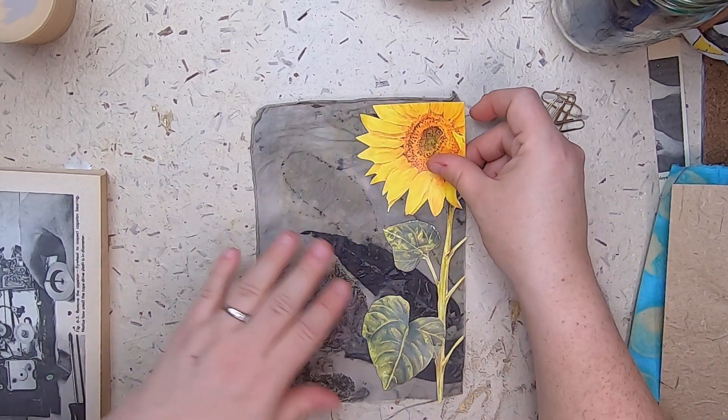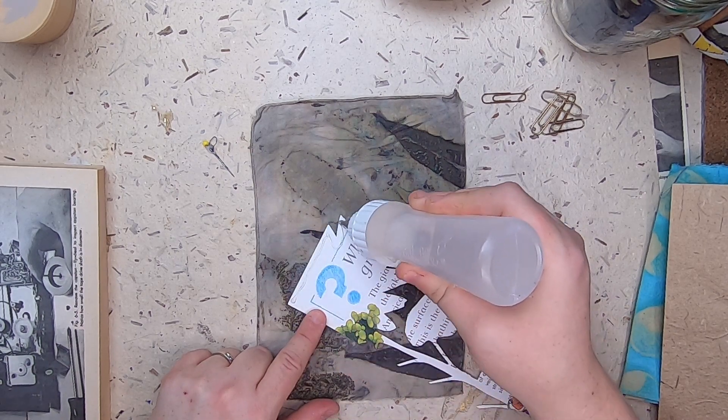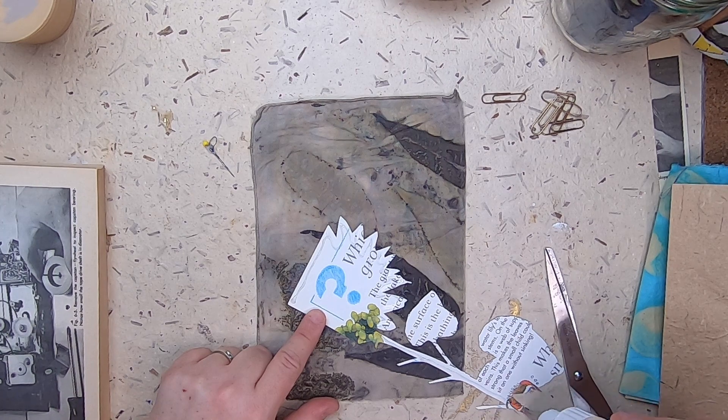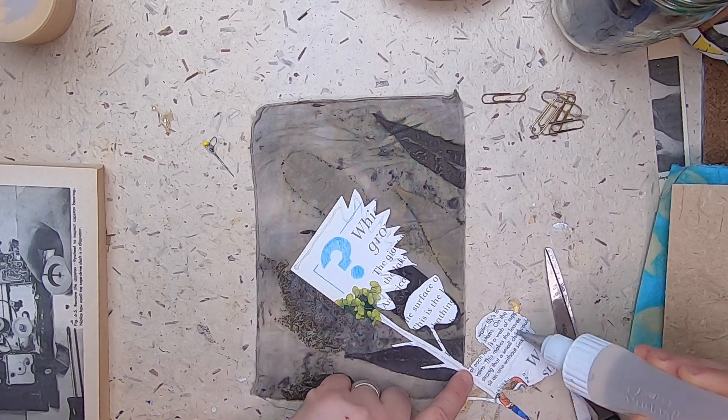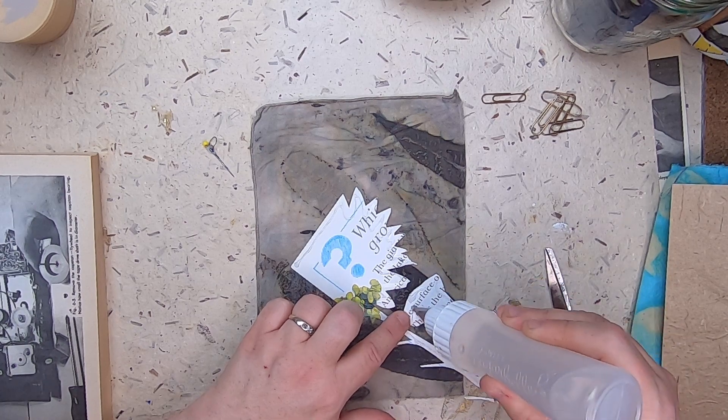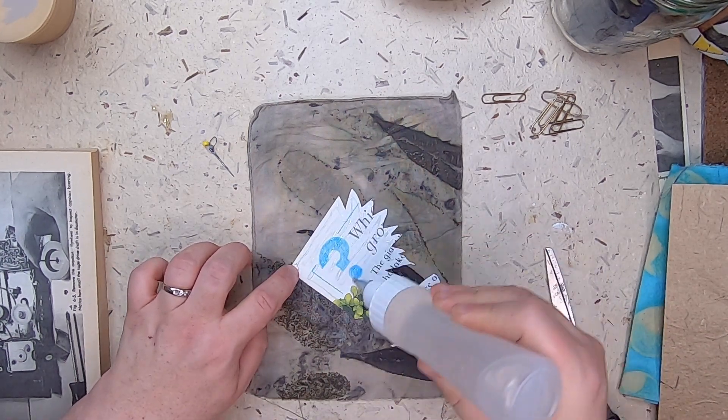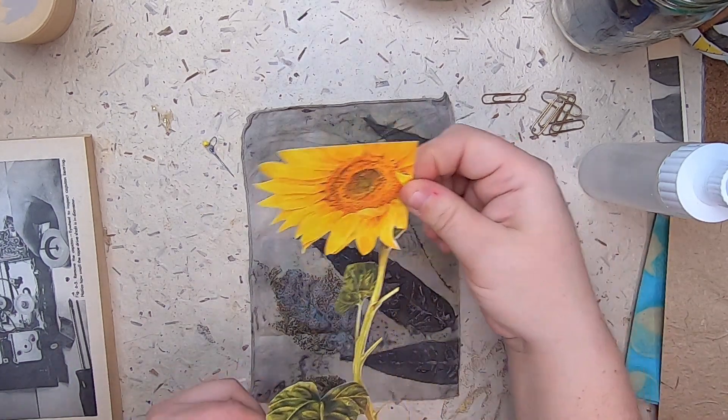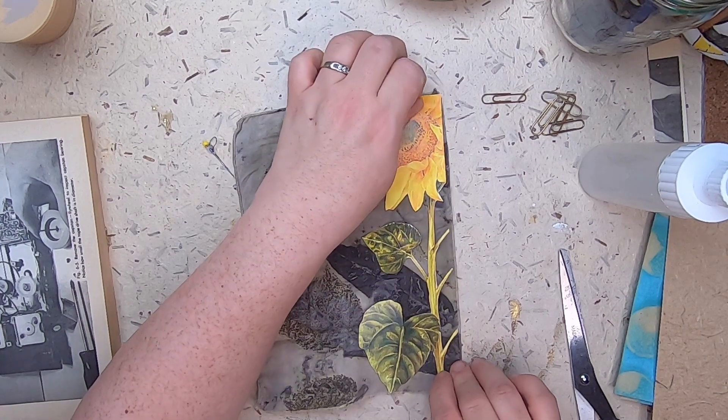So now I'm going to glue this down using some Fabri-Tac to just secure it on there. I feel like today's projects are a little bit more simplistic after a couple of more heavier technique projects, but in a way that's a good thing because it shows you that you can do simple things that are beautiful. You don't have to make every piece of ephemera take hours to create.